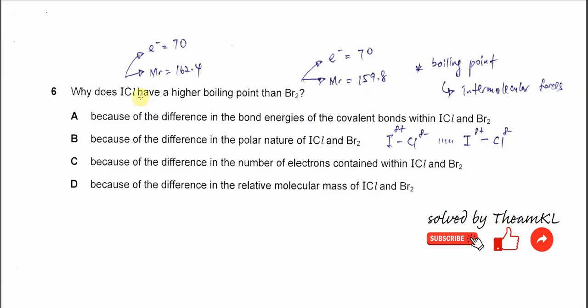Question 6: Why does iodine chloride have a higher boiling point than bromine? When it's a boiling point, normally we will use intermolecular forces. This is the main factor that affects the boiling point.